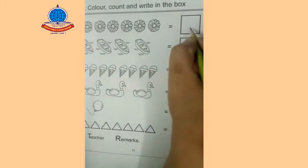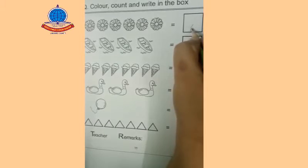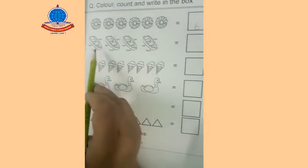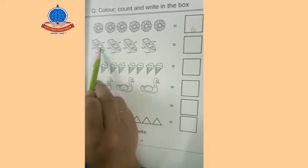Now next object, what is the next object? There are birds. Let's count with me: 1, 2, 3, 4. Write number four here.